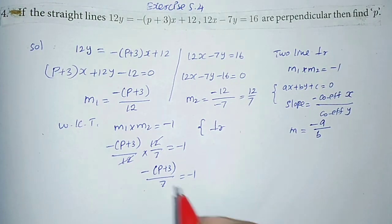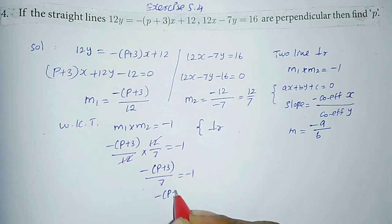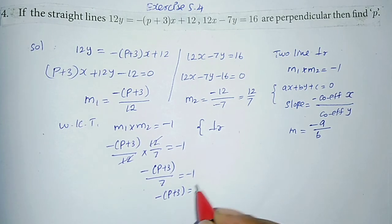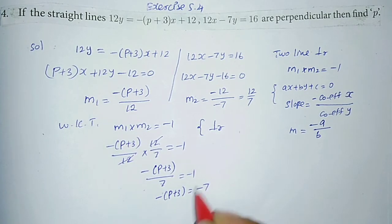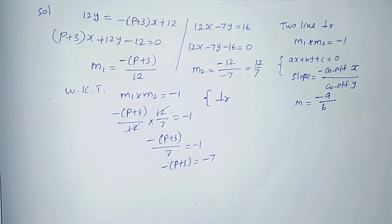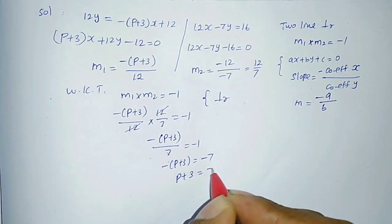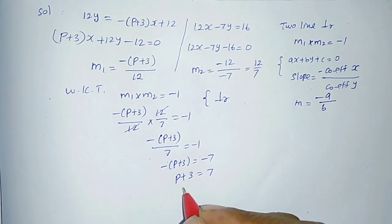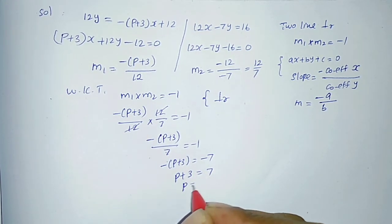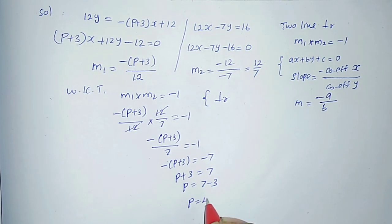Taking 7 to the other side: minus (p+3) = minus 1 into 7 = minus 7. The minus signs cancel on both sides, giving p+3 = 7. Therefore p = 7 minus 3, so p = 4.